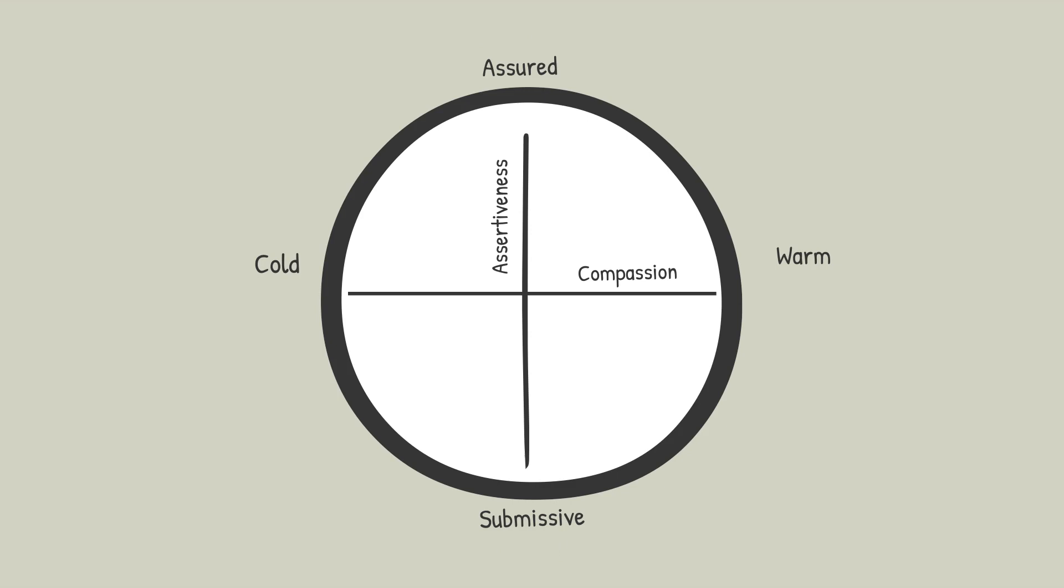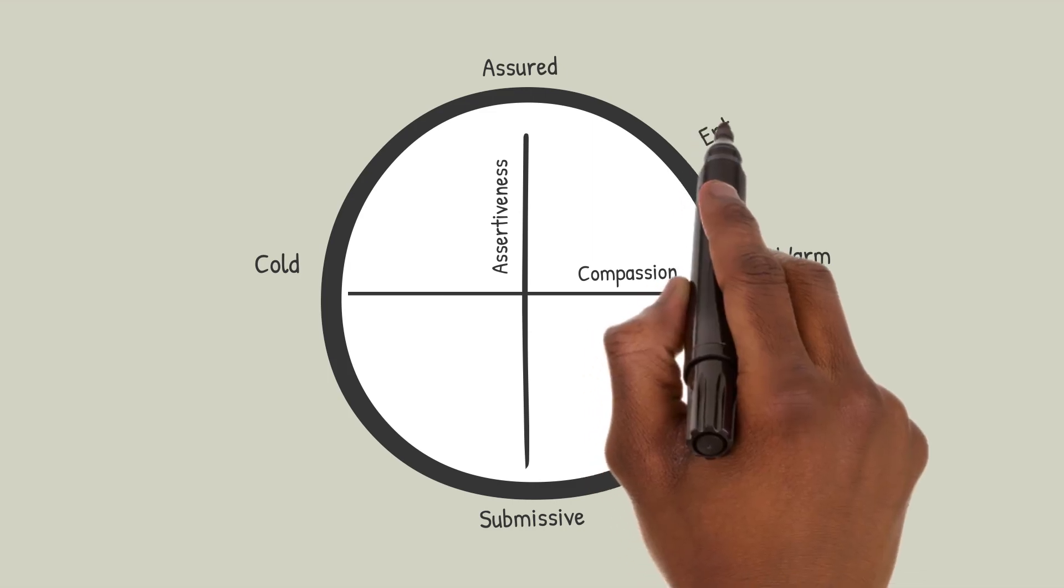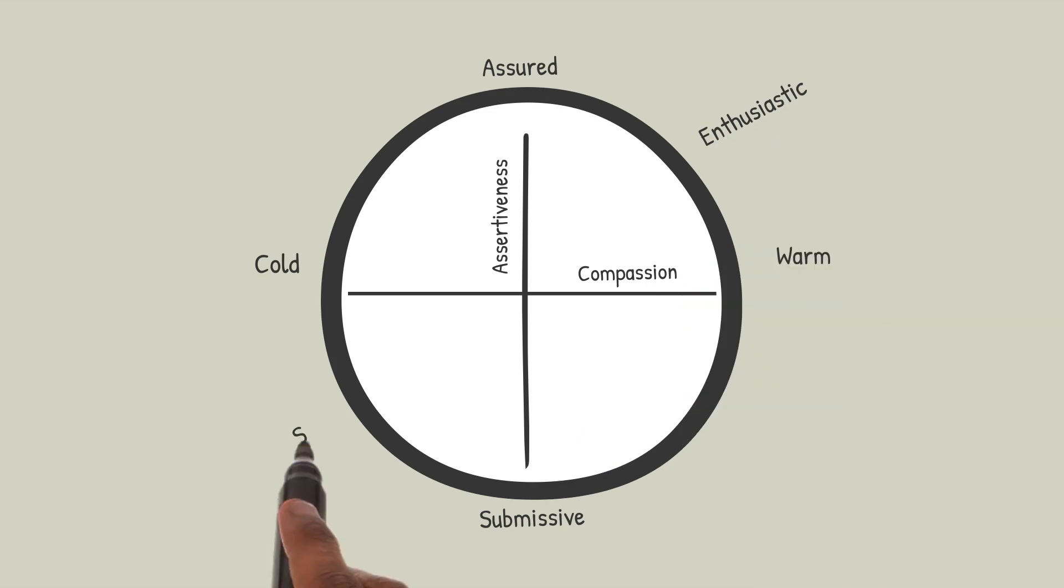We can now fill out other parts of the circle. If you have a combination of warmth and assuredness, you are enthusiastic, whereas if you have a combination of coldness and submissiveness, you are shy. If you're cold and assured, you're bossy or strict. If you're warm but unassured, you're forgiving. You can see how each item in these corners resembles the items adjacent to it. You can even insert words between these pairs of words, but we won't go to that level of detail today.